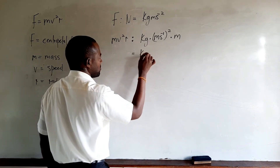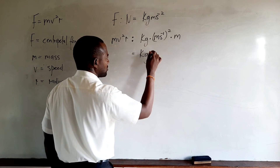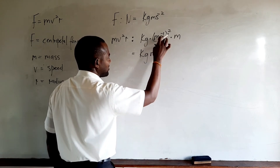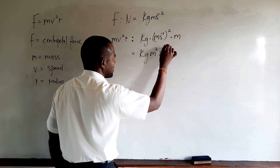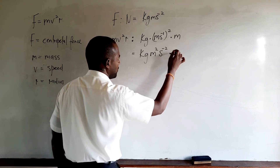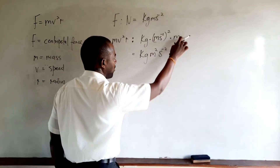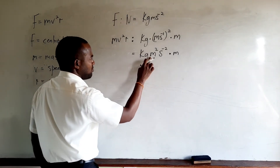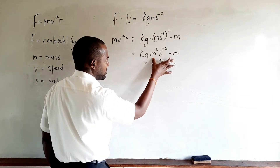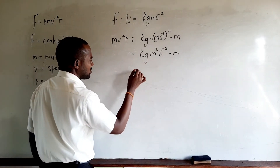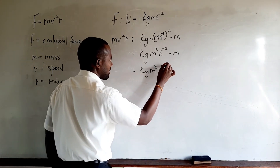Simplifying MV squared R: we get kilogram times meter squared per second squared, multiplied by meter. Meter squared times meter to the power of one — combining using the laws of indices, we add the powers — gives meter cubed. So the base unit equivalent of MV squared R is kilogram meter cubed per second squared.